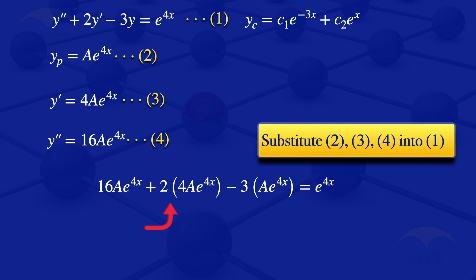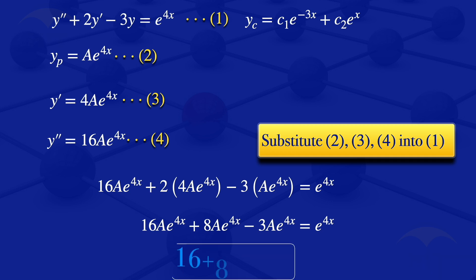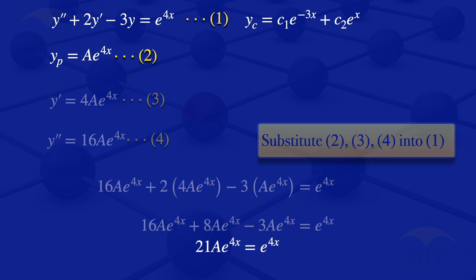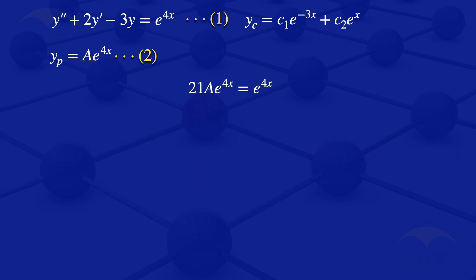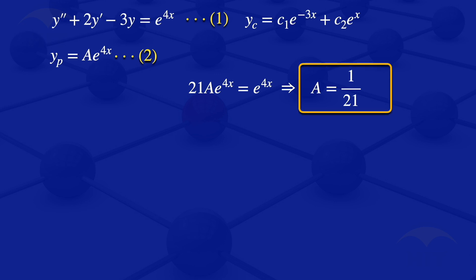Since 2 × 4 = 8, the equation becomes 16A·e^(4x) + 8A·e^(4x) - 3A·e^(4x) = e^(4x). Combining terms, 16 + 8 - 3 = 21, giving 21A·e^(4x) = e^(4x). Dividing both sides by e^(4x), we get A = 1/21. Substituting back, our particular solution is yp = (1/21)·e^(4x).